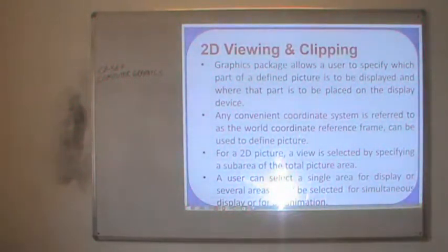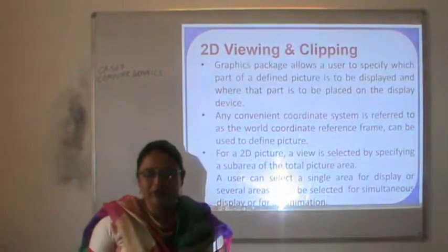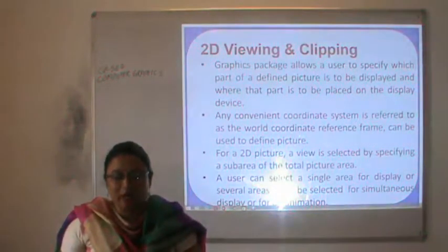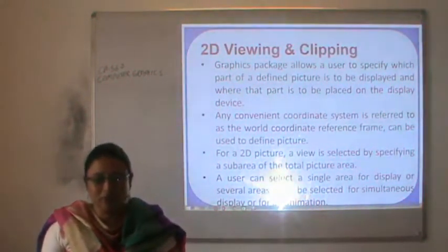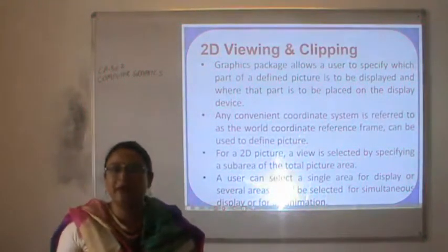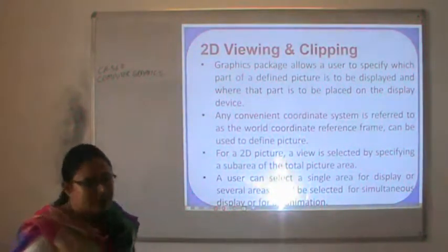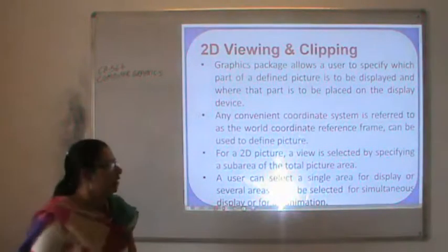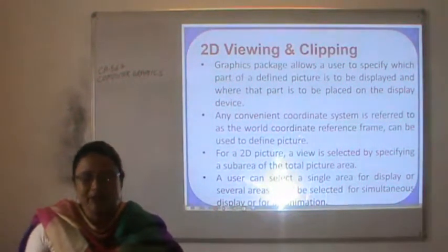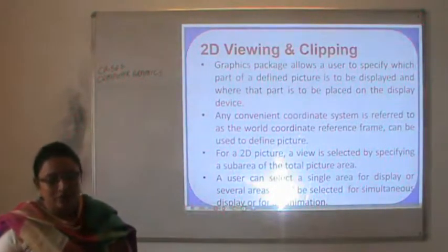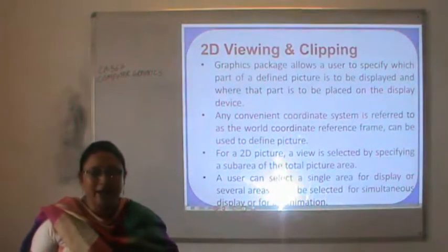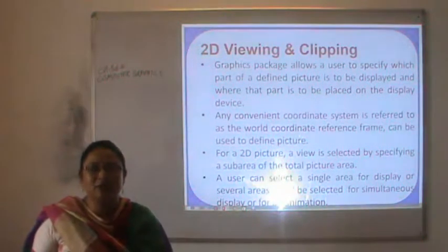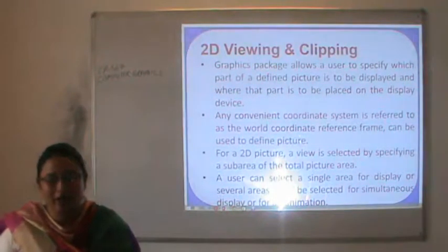Now, what is 2D viewing? A graphics package allows a user to specify which part of the defined picture is to be displayed and where that part is to be displayed on the display device. Any convenient coordinate system is referred to as the world coordinate system and can be used to define a picture. For a 2D picture, a view is selected by specifying a sub-area of the total picture area. A user can select a single area for display, or several areas could be selected for simultaneous display or for an animation.